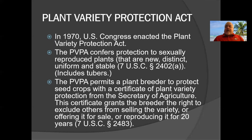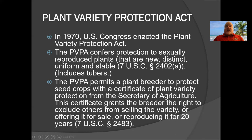A handful of commercial crops were being covered by the Plant Patent Act, but clearly that wasn't enough. So along came the Plant Variety Protection Act, which offers PVP certificates. This took another 40 years. In 1970, Congress enacted the Plant Variety Protection Act, and it confers protection to sexually reproduced plants that are new, distinct, uniform, and stable.